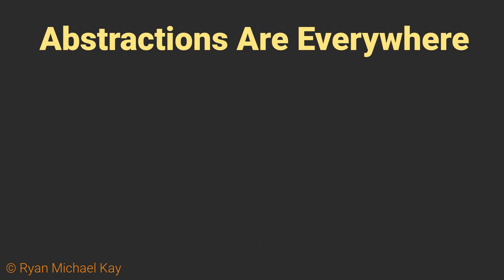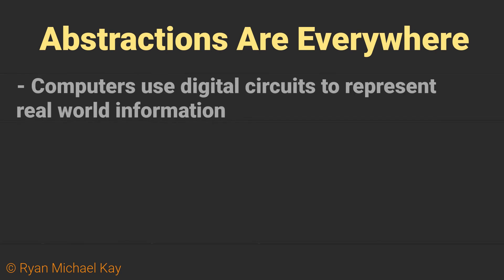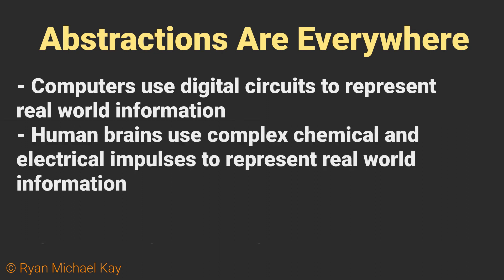Now that you have an idea of what an abstraction is, I encourage you to take a moment to consider how they are such a fundamental part of reality that they give rise to the ability of information processing systems such as computers or human brains to actually function. Computers use binary digits to represent whatever kinds of abstractions we tell them to. The human brain uses electrical impulses and chemicals to represent more detailed abstractions, such as sounds, images, emotions, etc.